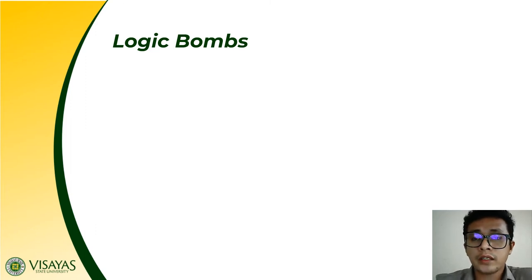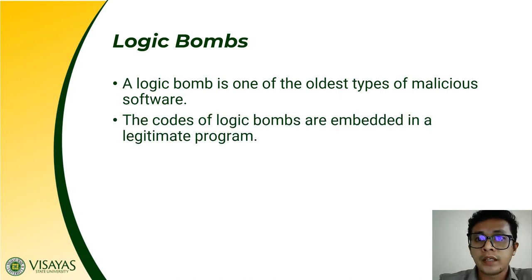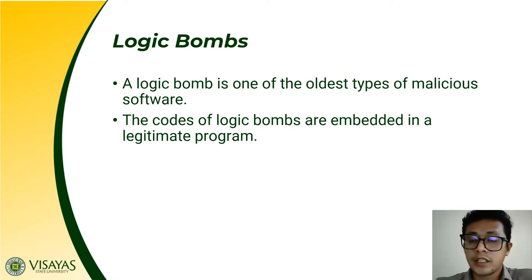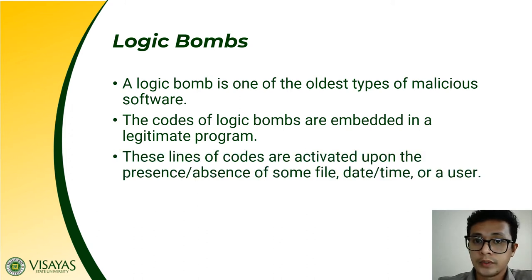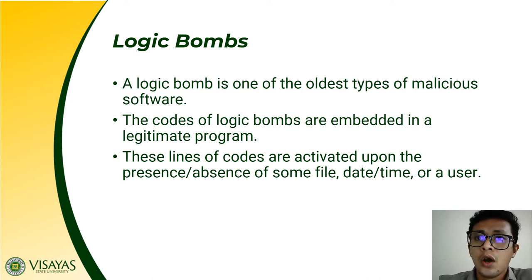Another example of a malicious software is what we call logic bombs. It is one of the oldest types of malicious software. The codes of logic bombs are embedded in a legitimate program. These lines of code are only activated upon the presence or absence of some file, date, time, or user. So there is a specific criteria for when this malicious software gets activated.